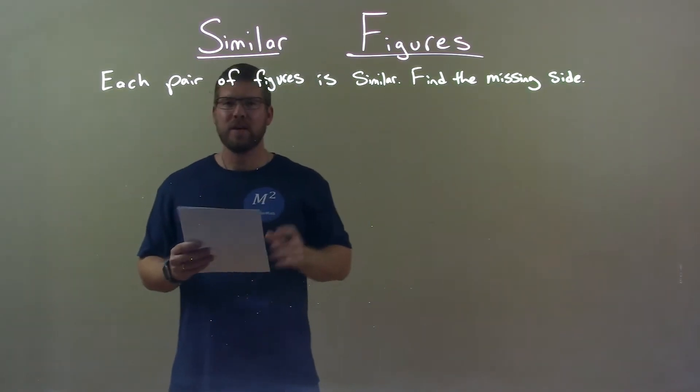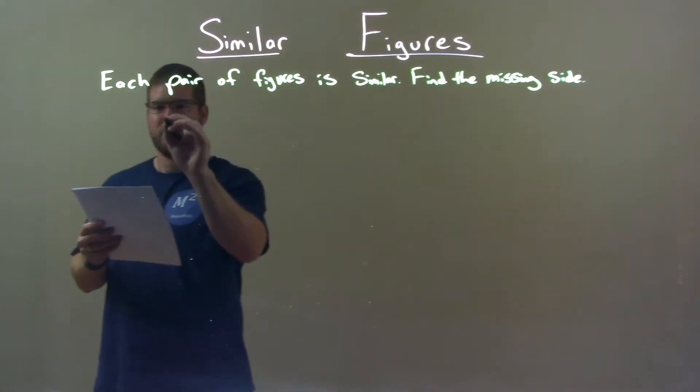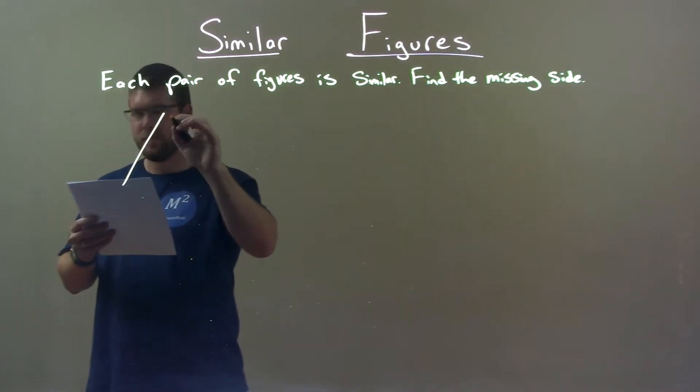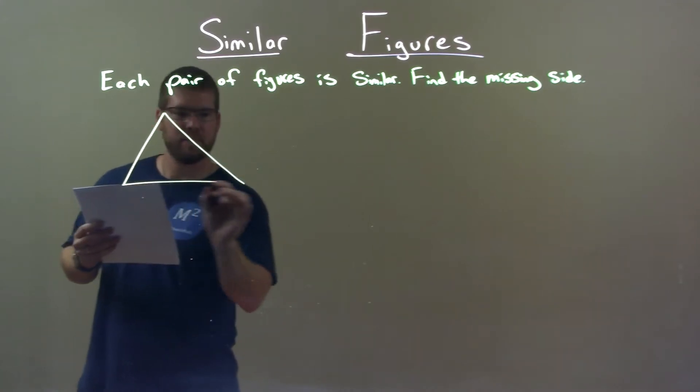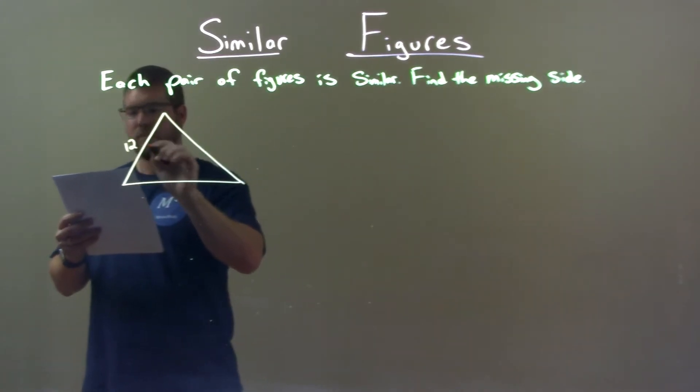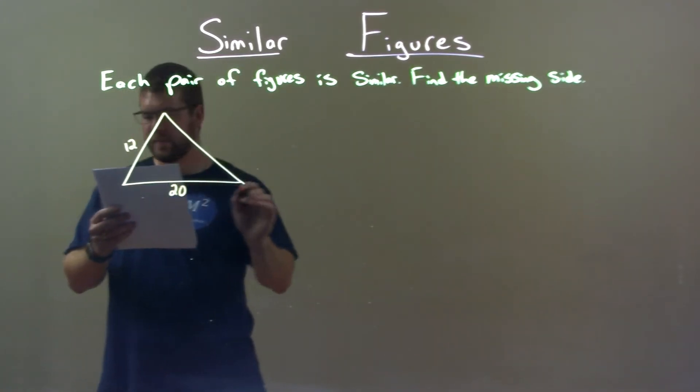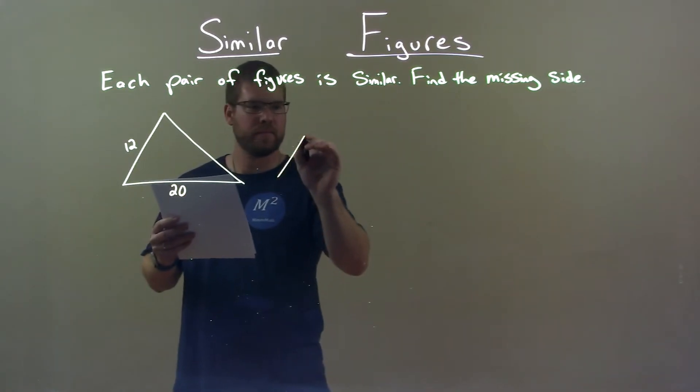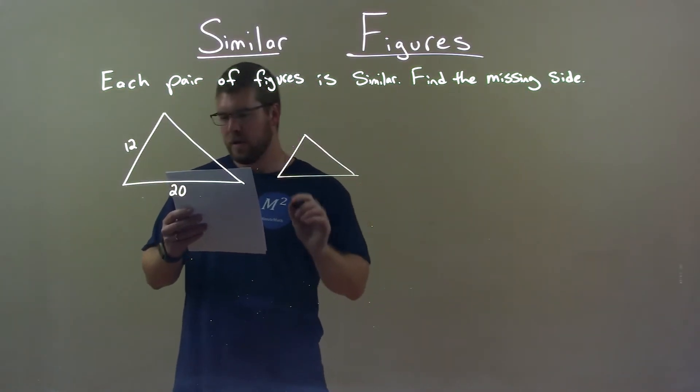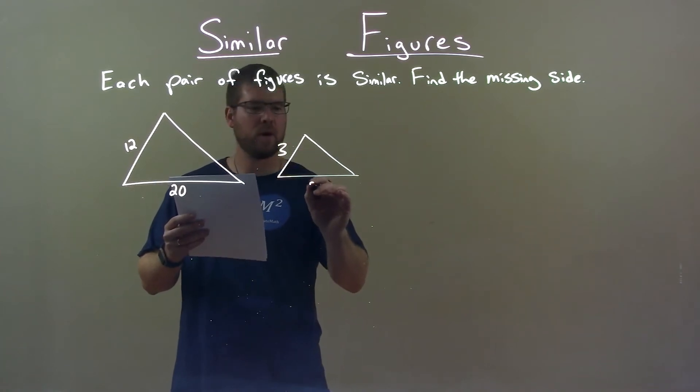I was given these triangles. We have a larger triangle here with a side length of 12 and another one of 20. Another triangle that's similar, smaller, has a side length of 3 and the other one of x.